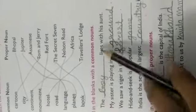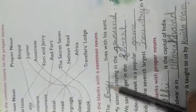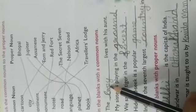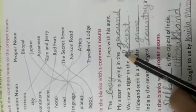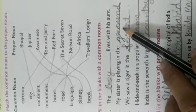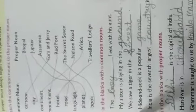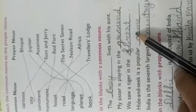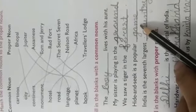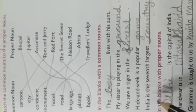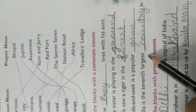अब next exercise देखो — fill in the blanks with a common noun। हमको common noun use करना है: 'The child lives with his aunt' — तो aunt के साथ boy या girl हो सकती है। 'My sister is playing in the ground' — कोई particular ground का नाम नहीं लिखना। 'We saw a tiger in the forest.' Hide and seek is a popular game — game is common noun। 'India is the seventh largest country in the world' — country जो है वो भी हमारा common noun है, और India जो है वो proper noun है।